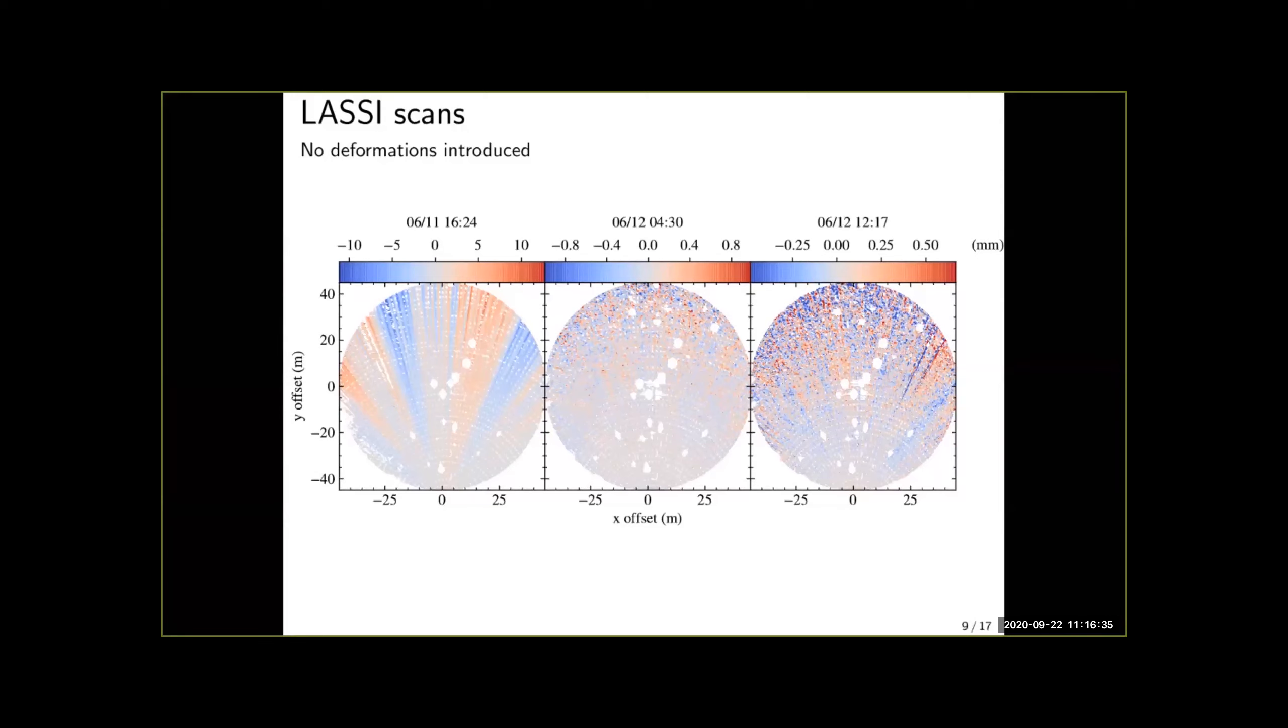In the center and right panels what we're seeing is the difference between scans taken three minutes apart. So in this case rather than deformations of the dish what we're seeing is mainly the range noise of the scanner since thermal deformations are not large enough on three minute scales. The difference on these scans is mainly showing us the range error of the scanner.